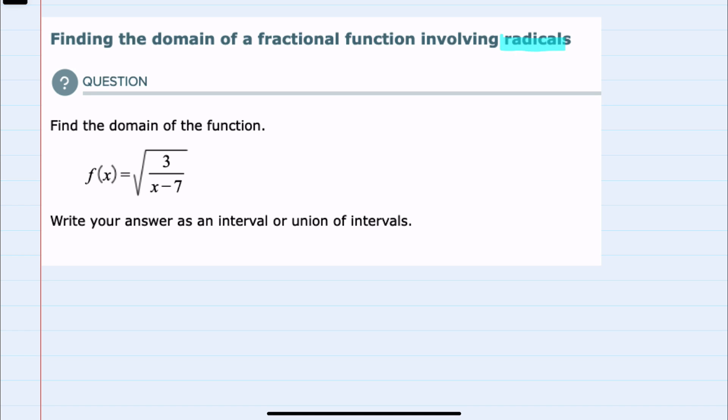That's our limitation for radicals. And also for fractions, the denominator cannot be 0. So the entire radical here, the 3 over x minus 7, would have to be greater than or equal to 0.